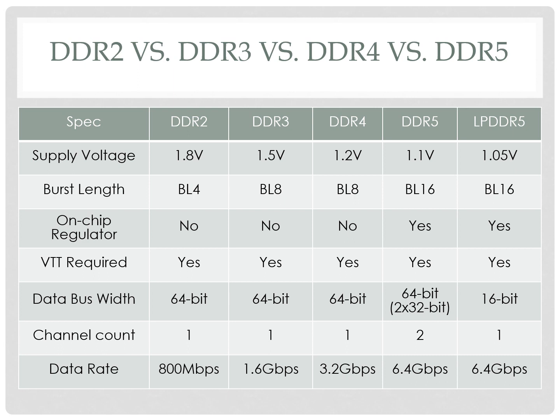DDR4 and DDR5 have additional ECC bits. DDR4 comes to 72 bits with 8-bit ECC. For DDR5, there are two channels, each of 32 bits, each with its own ECC, giving a 40-bit interface per channel. LPDDR5 is 16-bit with more channels internally. The channel count for DDR5 is 2.